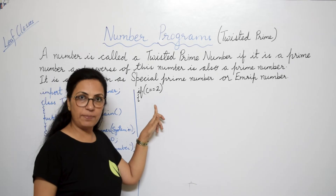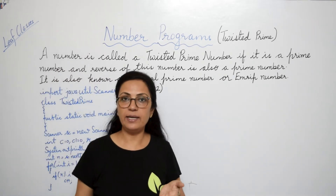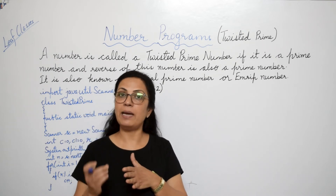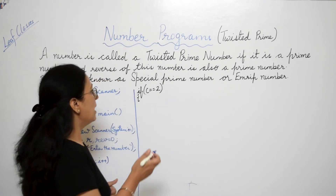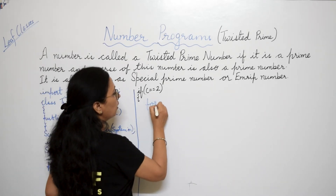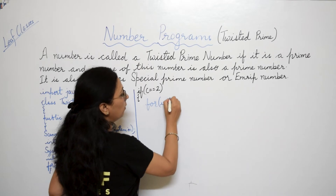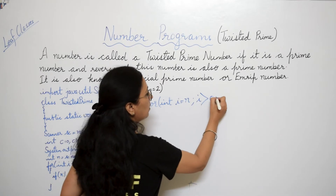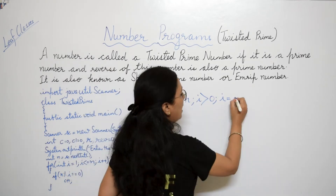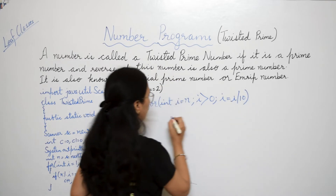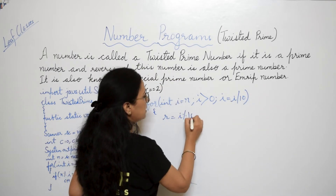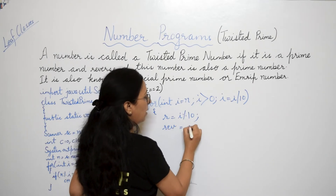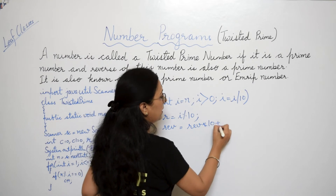When c equals 2 — meaning it is a prime number — we find the reverse of the number and check whether that reverse is also prime by calculating its number of factors. To find the reverse, we use: for(int i = n; i > 0; i = i / 10), then r = i % 10, and reverse = reverse * 10 + r.